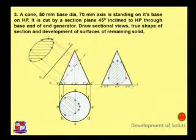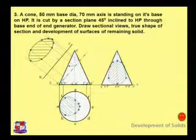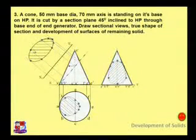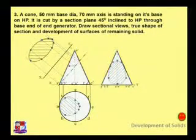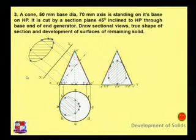Locate all these points, join them with a smooth curve, and draw sectional lines. This is the true shape of the cut section — it would appear as an ellipse, or a nearly irregular elliptical shape. When drawing section lines, take care that the angle between the section line and the reference line should be equal to 45 degrees — not the XY line but this reference line.